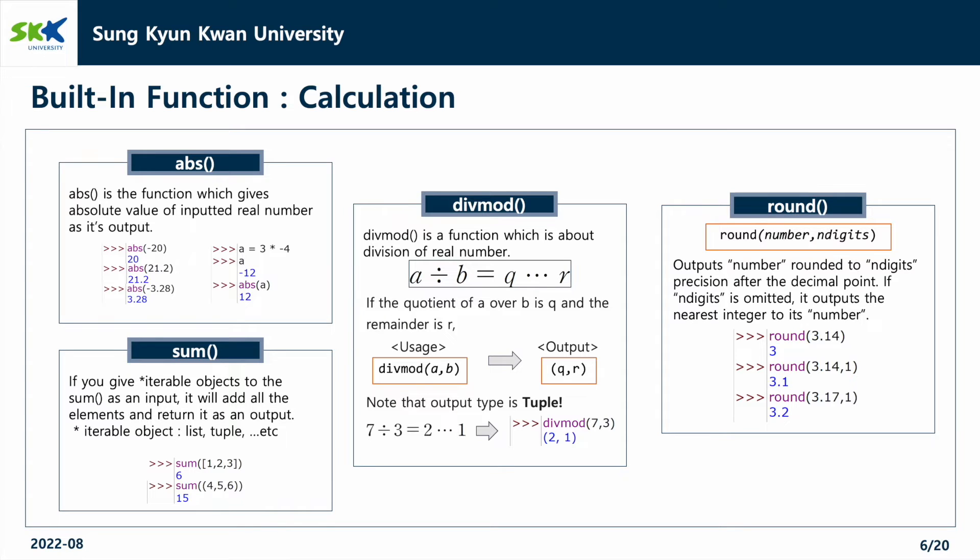Third, divmod is a function which is about division of real numbers. In the following equation, we know that if the quotient of a over b is q and the remainder is r, the output value of divmod is q, r as a tuple.